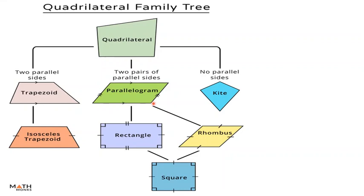And in kite, it has no pairs of parallel lines. So that's the difference between trapezoid parallelogram and kite. Again, trapezoid, one pair of parallel lines. Parallelogram, two pairs of parallel lines. Kite, no pair of parallel lines.